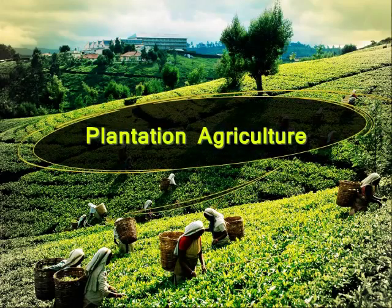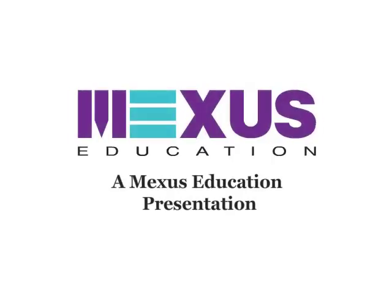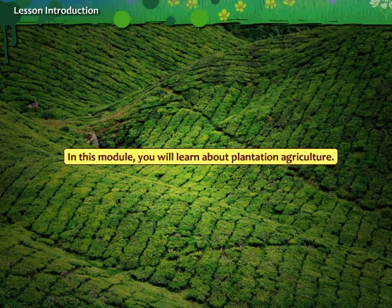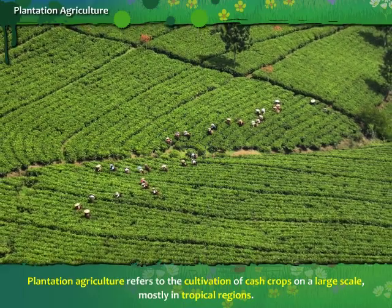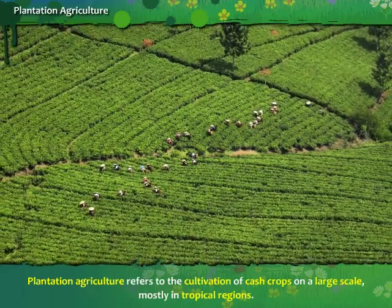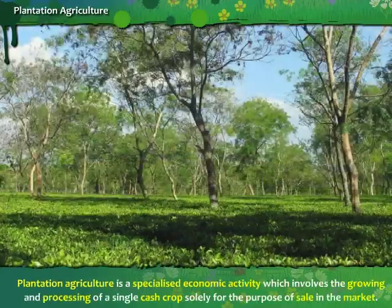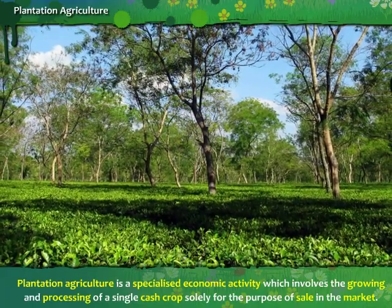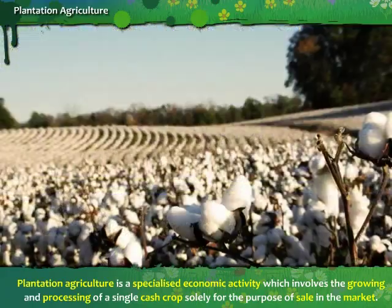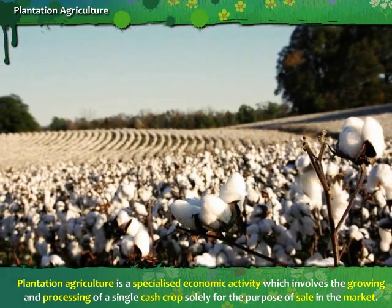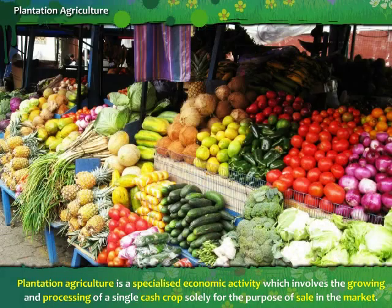In this module you will learn about Plantation Agriculture. Plantation agriculture refers to the cultivation of cash crops on a large scale, mostly in tropical regions. It is a specialized economic activity which involves the growing and processing of a single cash crop, solely for the purpose of sale in the market.